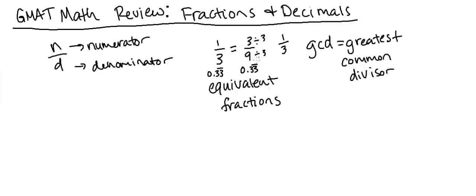By reducing three ninths, it ends up being one third, which is exactly equal to what is on the left-hand side — also one third.